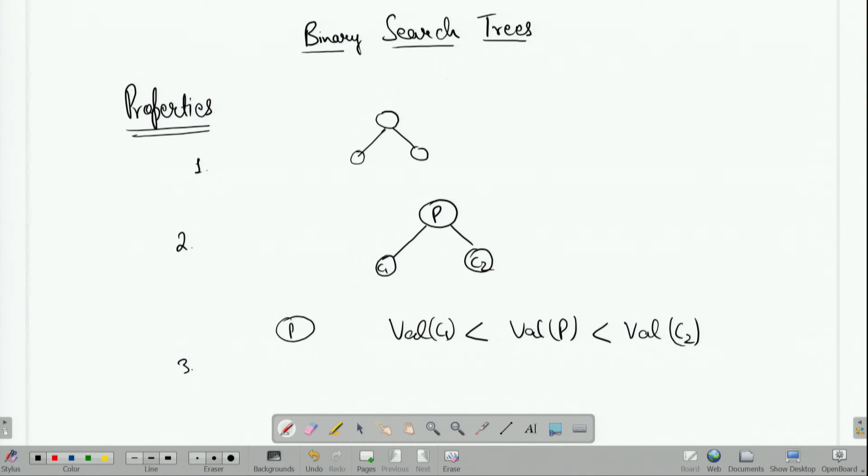search tree, the entire tree which is to the left of the parent is less than the value of the parent, and the entire tree to the right of the parent is greater than the parent.